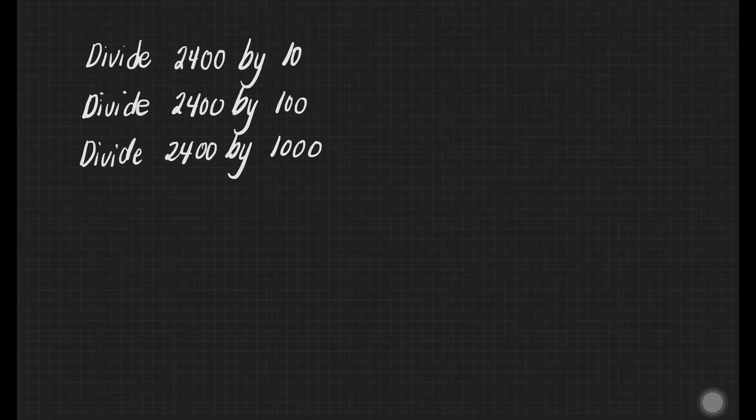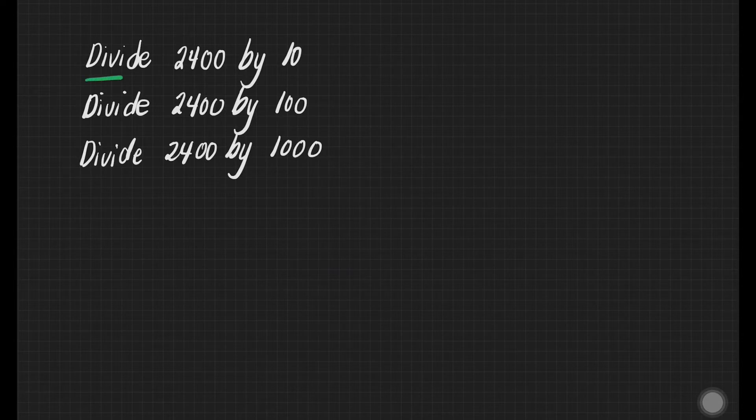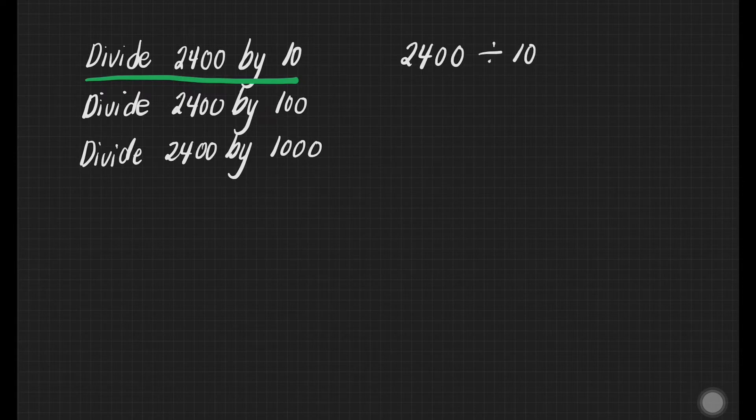Let us now have some exercises. Let's have the first one, divide 2,400 by 10. This is very easy. We can just cancel 1 zero from dividend and 1 zero from divisor. And we'll get 240 divided by 1. And that is 240. That's it.